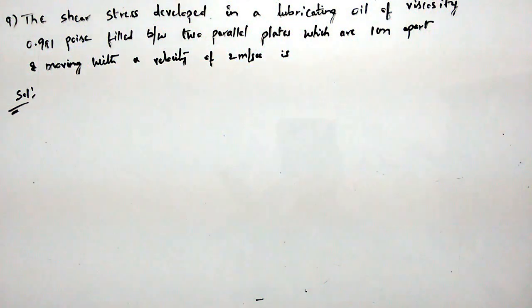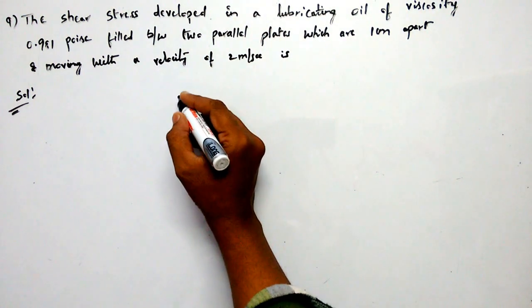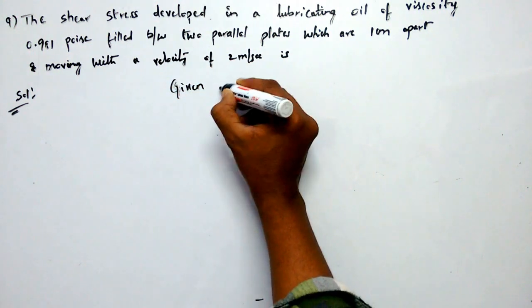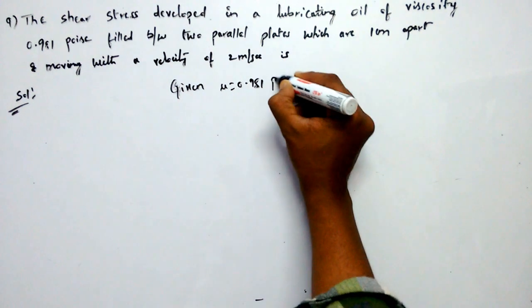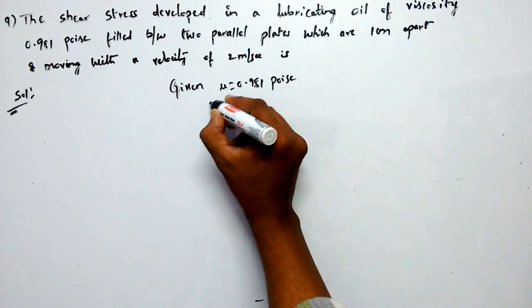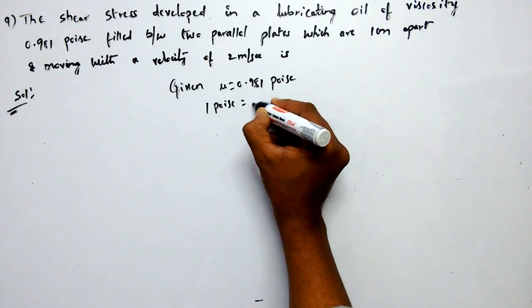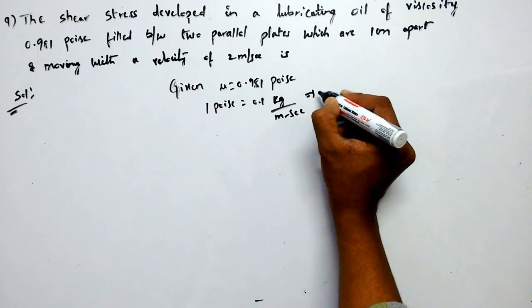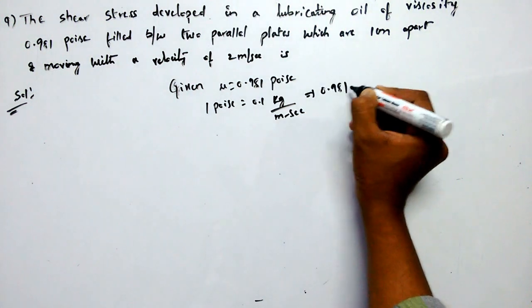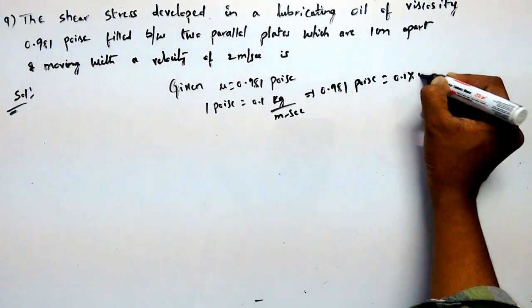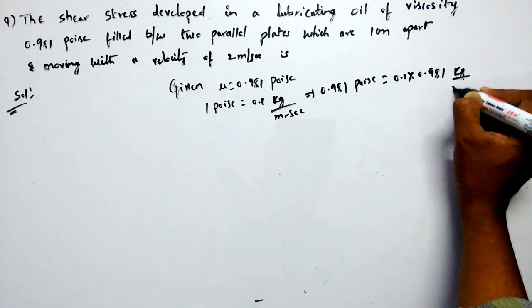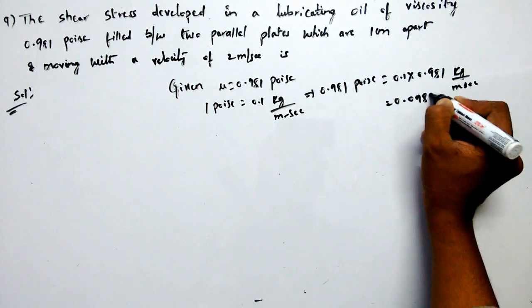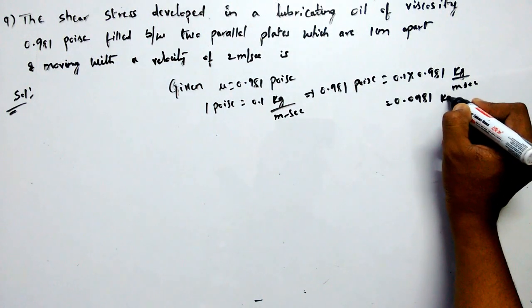Therefore, the question is based on Newton's law of viscosity. The given data is viscosity equals 0.981 poise. Since 1 poise equals 0.1 kg per meter second, 0.981 poise means 0.1 into 0.981 kg per meter second, or 0.0981 kg per meter second.